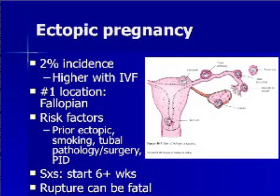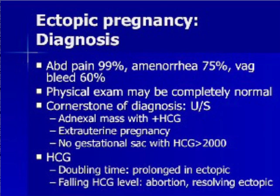Ectopic pregnancy is the most important rule-out diagnosis in the evaluation of first trimester bleeding or pain. It occurs in 2% of all recognized pregnancies. In vitro fertilization increases the risk of both ectopic and heterotopic pregnancy. Heterotopic pregnancy refers to an intrauterine pregnancy with a concomitant ectopic pregnancy. The number one location for an ectopic is in the fallopian tubes. Risk factors include prior ectopic, smoking, and any fallopian tubal pathology including surgery and PID. Symptoms are generally evident after 6 weeks of gestational age. Ectopic pregnancy is the most common cause of pregnancy-related maternal death in the first trimester. Any previously healthy woman of childbearing age who presents with syncope, hypotension, and abdominal pain should be presumed to have ectopic pregnancy until proven otherwise.